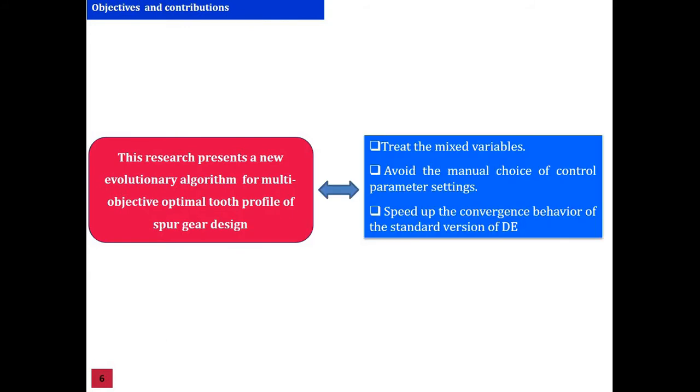For this reason, this research presents a new evolutionary algorithm for multi-objective optimal tooth profile of spur gear design. Also, the proposed method aims to treat the mixed variables and to avoid the manual choice of control parameter settings. Also, to speed up the convergence behavior of the standard version of differential evolution.